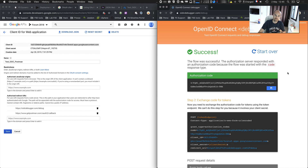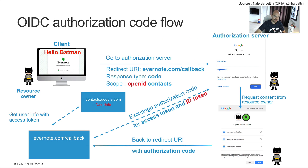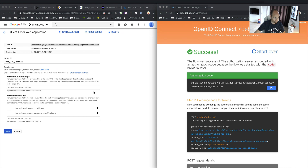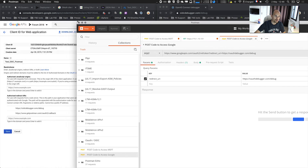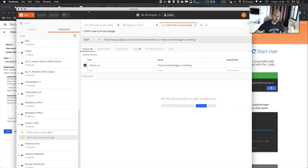So if you remember my slide, now I have a code on the client side, and I need to exchange this code for an access token and ID token. This has to be done on the backend side. To simulate this backend, we're going to use Postman, because with OpenID Connect Debugger there is no backend simulation.